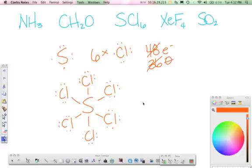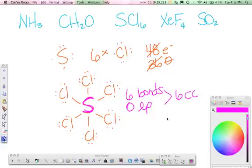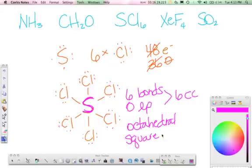Now we look at our center atom. Sulfur right there is our central atom. How many bonds does it have? It's got six bonds and zero lone pairs. We go to our chart and six charge clouds with zero lone pairs is octahedral in shape. Or you can also call this square bipyramidal.